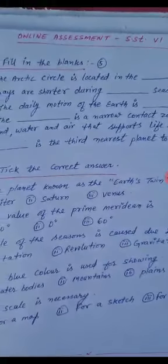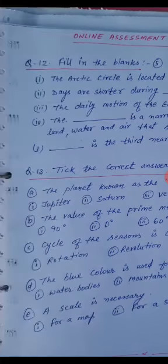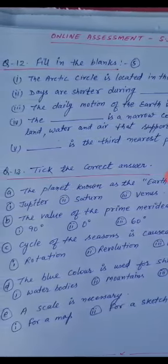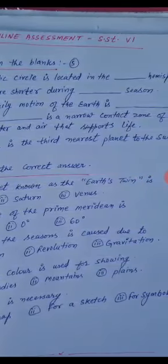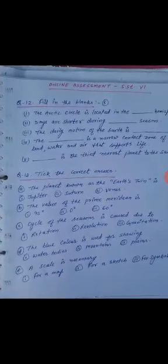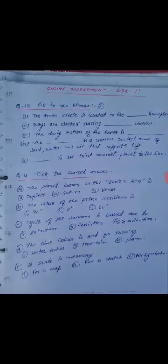The cycle of seasons is caused due to rotation, revolution, or gravitation. The blue color is used for showing water bodies, mountains, or plains. Tick the correct one. Last: a scale is necessary for a map, for a sketch, or for symbols. Tick the correct one.